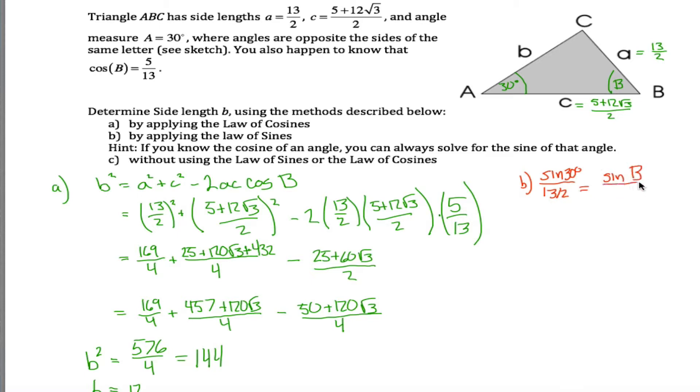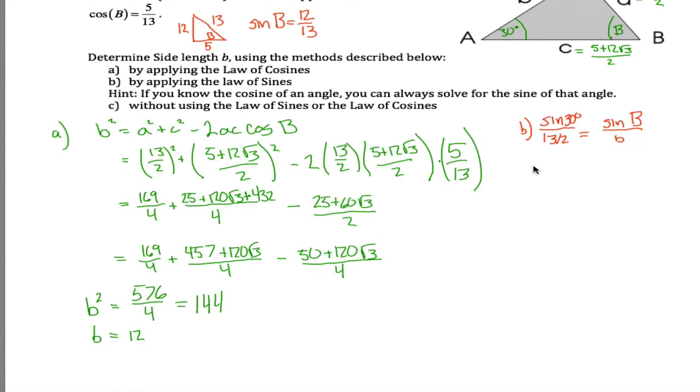I do know angle A and the side opposite A, so I can say that the sine of 30 degrees divided by 13 halves is the exact same as the sine of B divided by little b, which is what I'm trying to figure out. And you might take issue with that because you're like, yeah, we don't know the sine of B. However, I would argue that we do because if the cosine of B is 5 thirteenths, then I can draw a little right triangle. Here's B. The sine of B is 12 thirteenths.